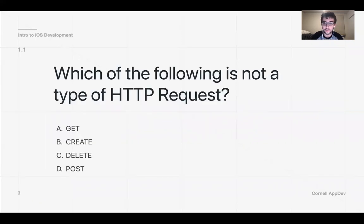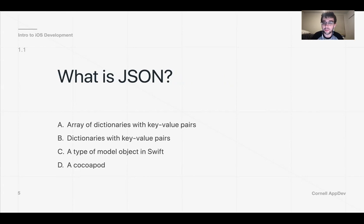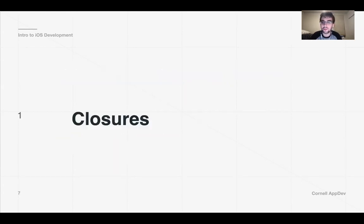First off, which of the following is not a type of HTTP request? If you remember from last week, if you clicked on Postman you can see all the possible HTTP requests. 'Create' was not actually included — if you want to create something you use a POST request. JSON is not a CocoaPod (those are external libraries), it's not a Swift model object — it's JavaScript Object Notation, completely separate from Swift. It's a dictionary with key-value pairs, so the answer is B.